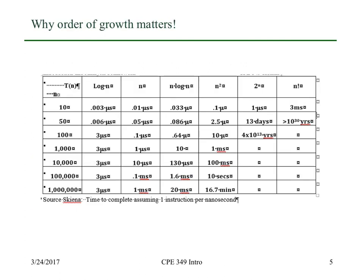Just to give you some idea of why we can focus, in many cases, just on the order of growth, here are some typical orders of growth: log n, some constant times n, n log n — lots of sort routines are n log n — n squared, 2 to the n, and n factorial.